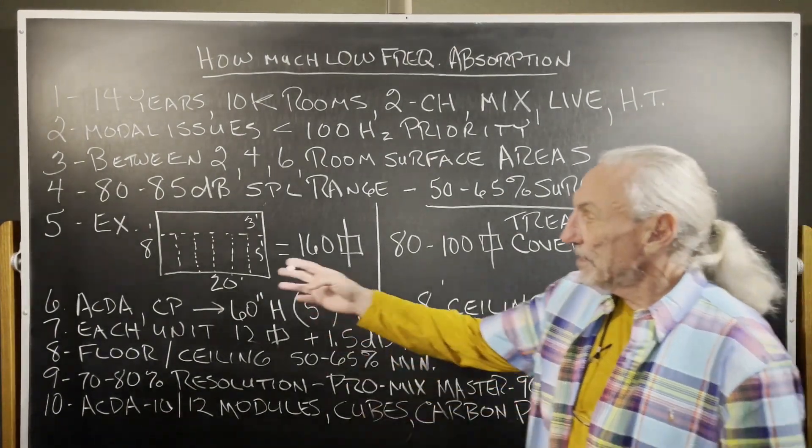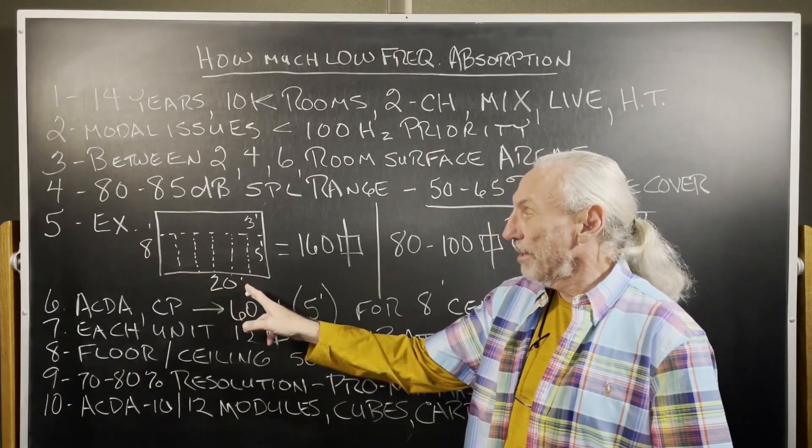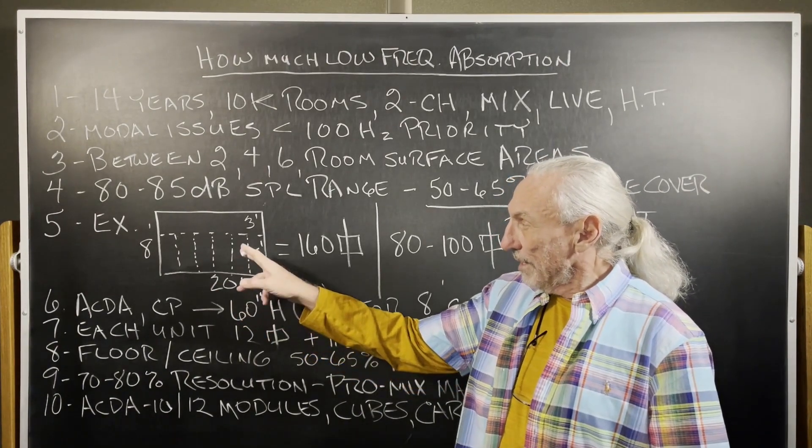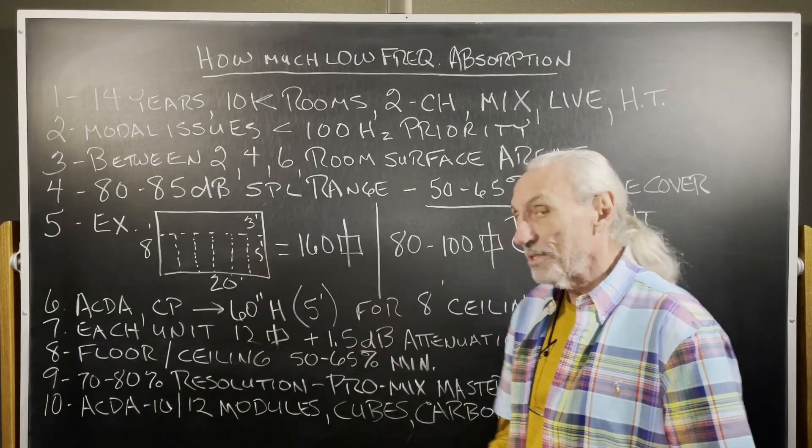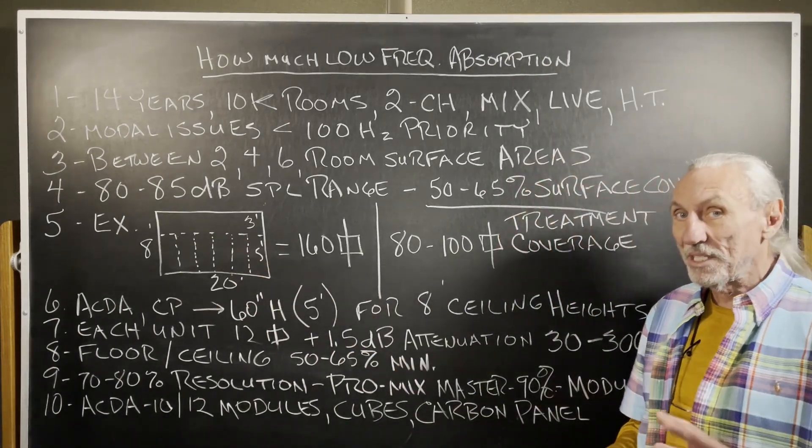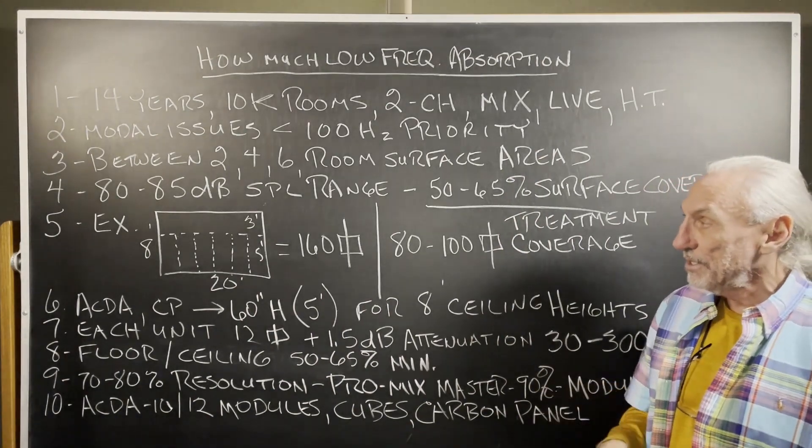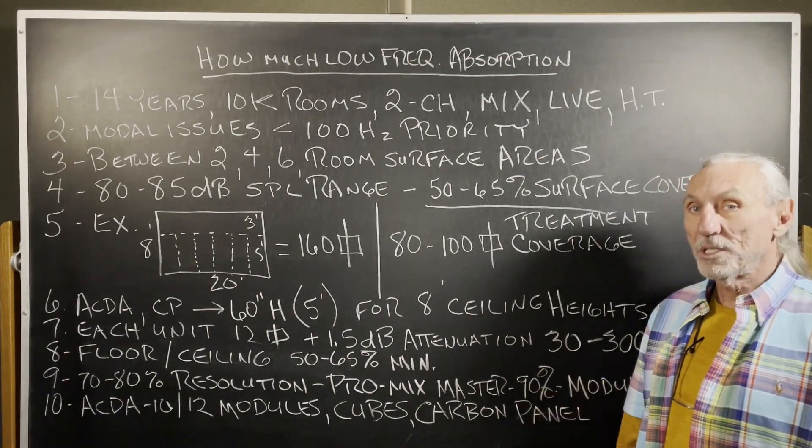So let's look at an example here. Eight foot ceilings, 20 foot width or length. So our units are 60 inches high, which is five feet. So you can see that you get that 65 percent surface area coverage with our freestanding units.